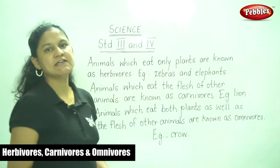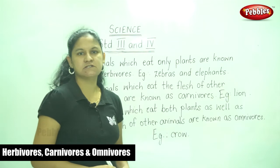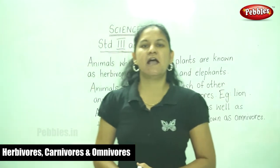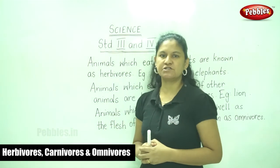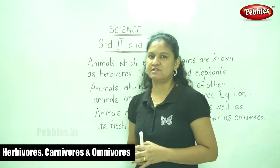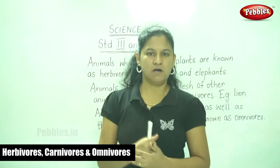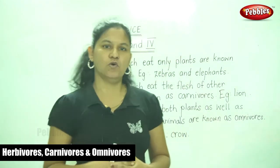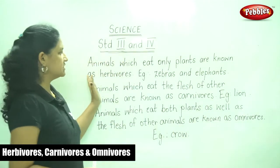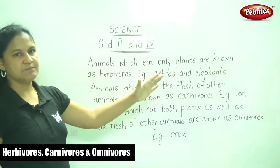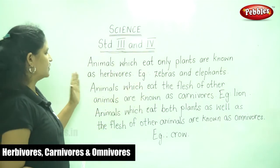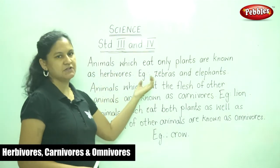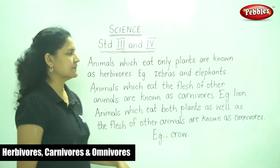Based on their eating habits, animals can be characterized into three types: herbivores, carnivores, and omnivores. Animals which eat only plants are known as herbivores. Examples are zebras and elephants.